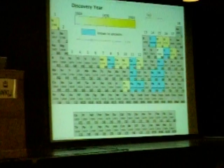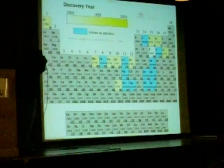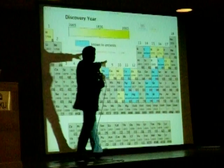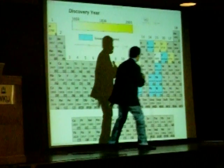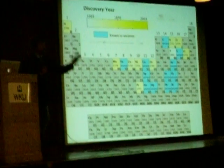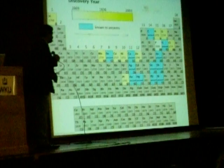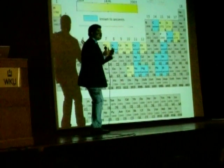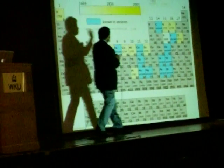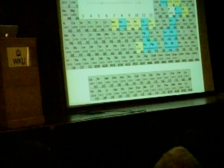Let's go ahead and do that. Let's move ahead to 1776 — there's a little sliding scale here. The blue ones were known to the ancients. The yellow ones were discovered and known up until the year of our independence from England. So if you had a periodic chart of the elements then, you would only have these elements on it: nitrogen, oxygen, chlorine, manganese, platinum.